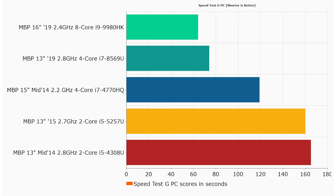Here's the graph of the existing Macs I was able to test. SpeedtestGPC measures in seconds — the longer it takes, the slower the device. The slowest is a mid-2014 2.8 GHz dual-core i5 fourth-generation processor. At the top, finishing in 64 seconds, is a 2019 MacBook Pro 16-inch with an eight-core i9. I'm now going to show a side-by-side video of SpeedtestGPC running on the new M1 compared against that very same MacBook Pro with the i9.